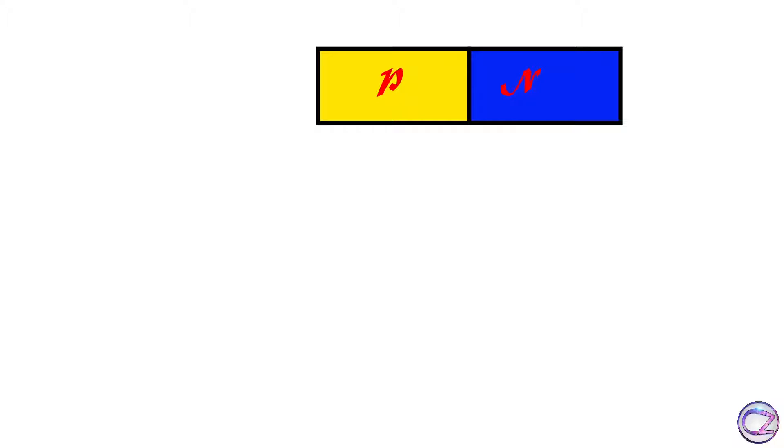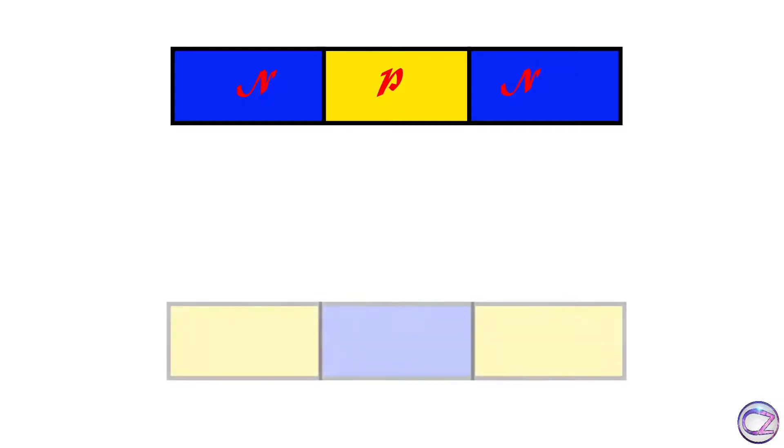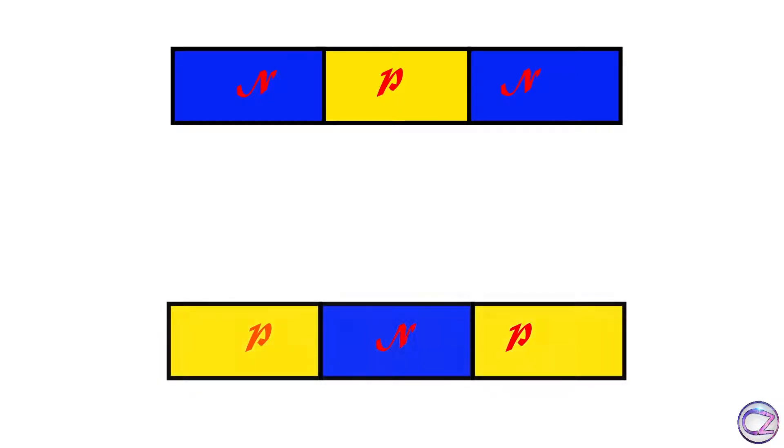If we add an extra layer of N-Type impurity with a diode as shown, then we will get an NPN transistor. Likewise, we will get a PNP transistor by adding an extra layer of P-Type impurities.